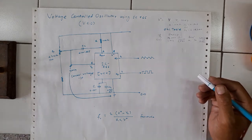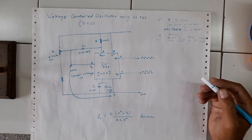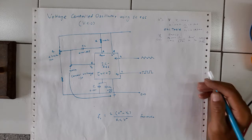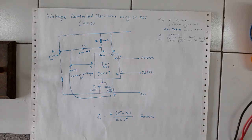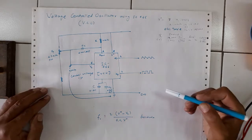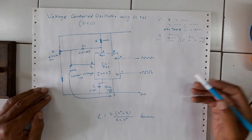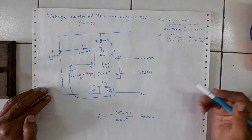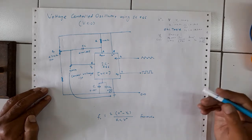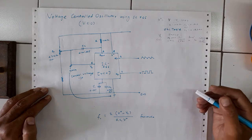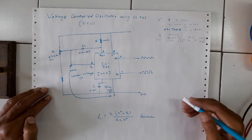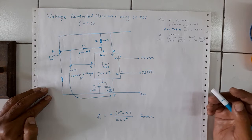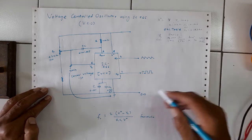With an RC time constant, if we vary R we can try to vary the frequency of oscillation, but that frequency remains essentially constant. Now in this experiment, if there are certain applications where we need to change the frequency — such as frequency modulation, tone generation, or FSK (Frequency Shift Keying) — the frequency needs to be controlled. This can be done by applying some kind of potential, which we call the controlled voltage, at the input.